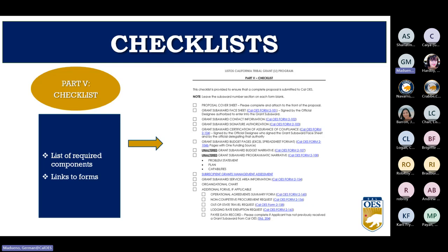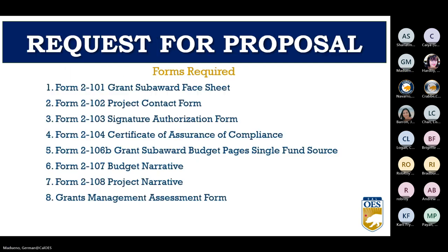For example, if you do not have any out-of-state travel, you won't need to include that form with your proposal. There are eight forms required with every request for proposal regardless of program type. Most programs will require additional forms, so read your RFP thoroughly. The forms can be found at the very end of the RFP in the checklist section with a hyperlink to each form.